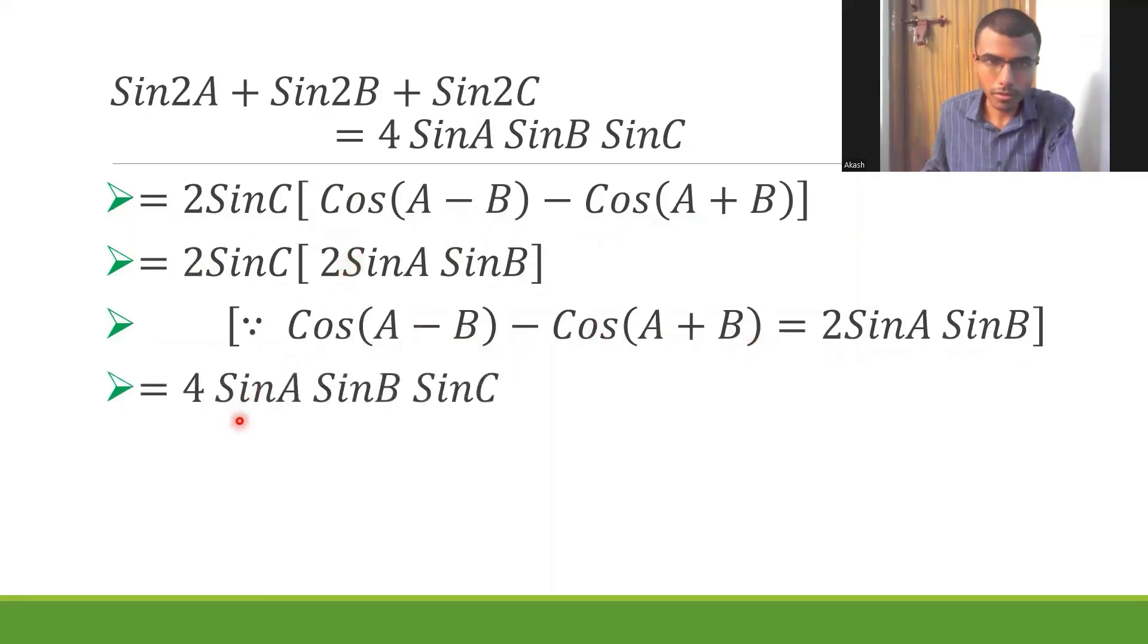Multiply 2 into 2, you have 4sinA sinB sinC. That's it, we are done. You understood how I mentioned in a systematic way and gave reasons for various steps. This is how if you write, you are sure to get full marks. Thank you. In case you like this video, please hit the like button, and if this is your first time coming across my channel, please join and subscribe.